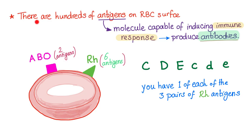There are hundreds of antigens on the red blood cell surface. Antigens are molecules that are capable of inducing an immune response, i.e., capable of producing antibodies against these antigens. The red blood cell has ABO antigens — two antigens, A antigen or B antigen. There is no such thing as the O antigen.